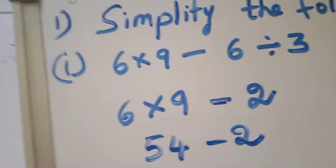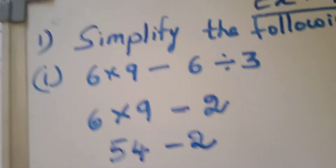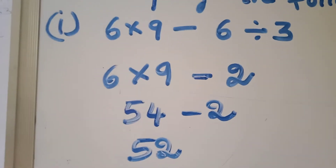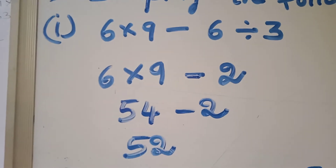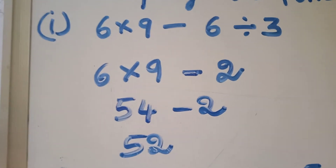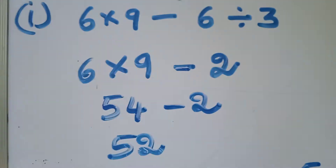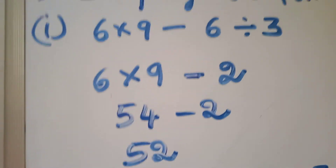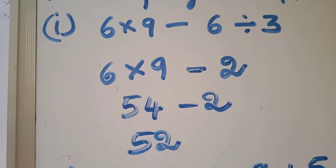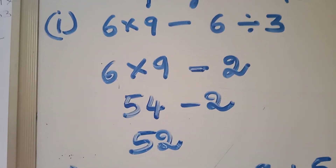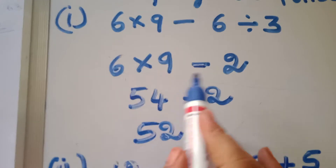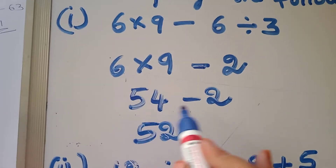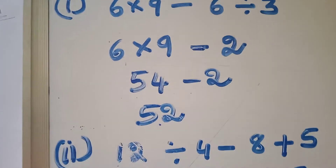First, simplify the following. In this, 6 into 9 minus 6 is divided by 3. So first, division: 6 divided by 3 is 2. Next, 6 nines are 54 minus 2, which equals 52.